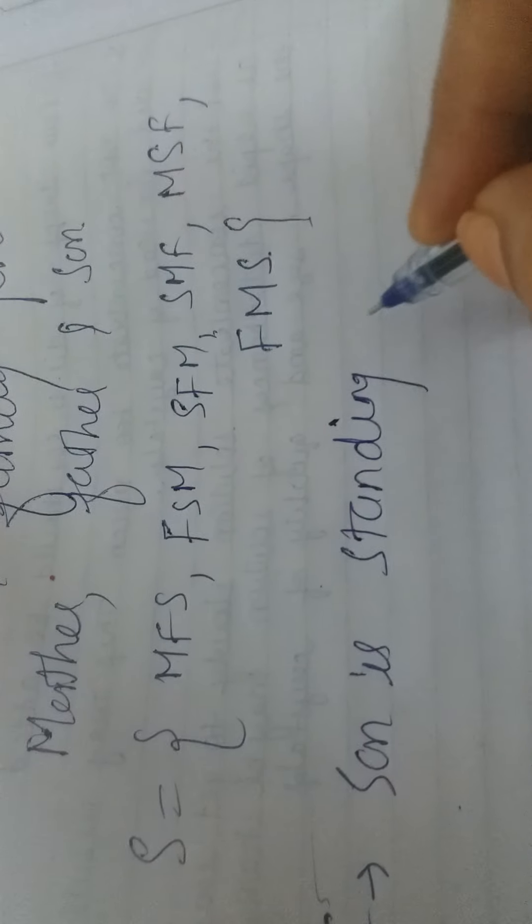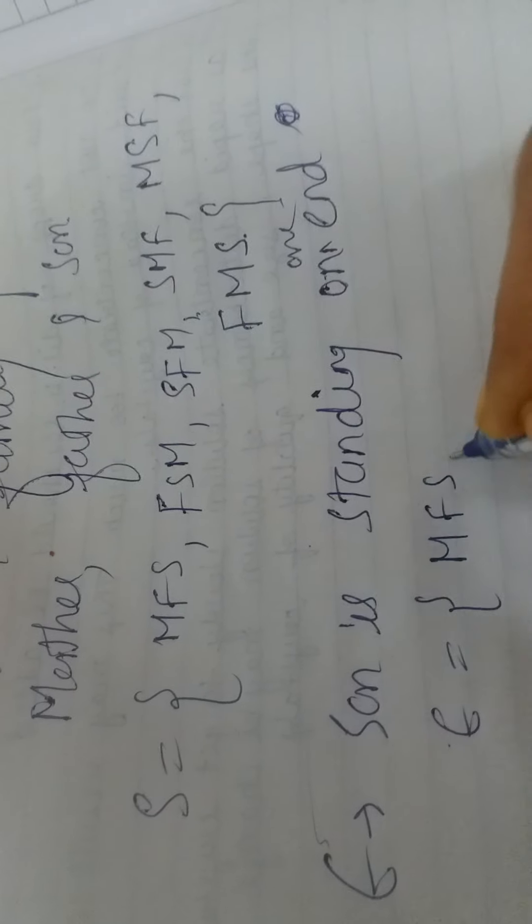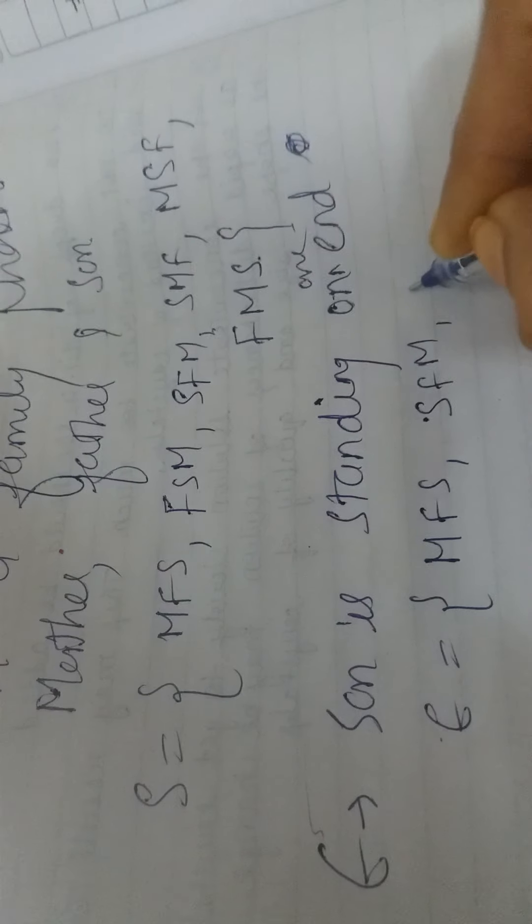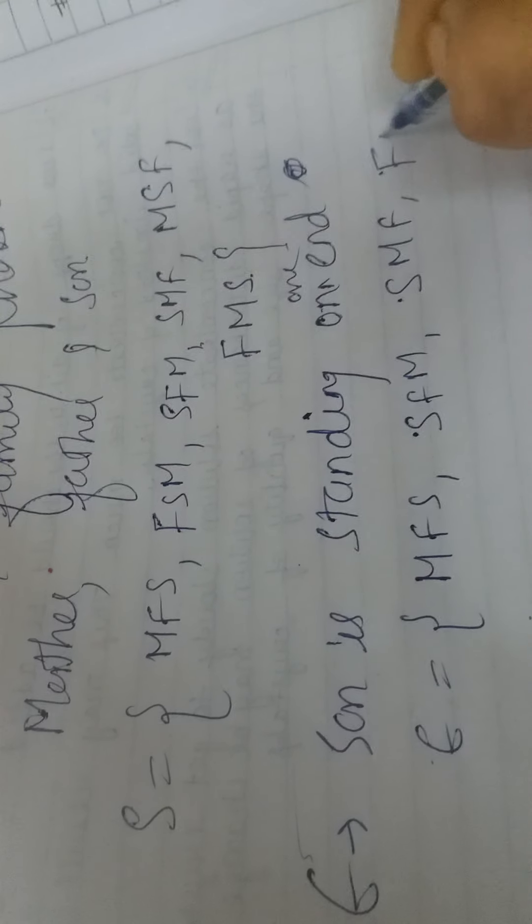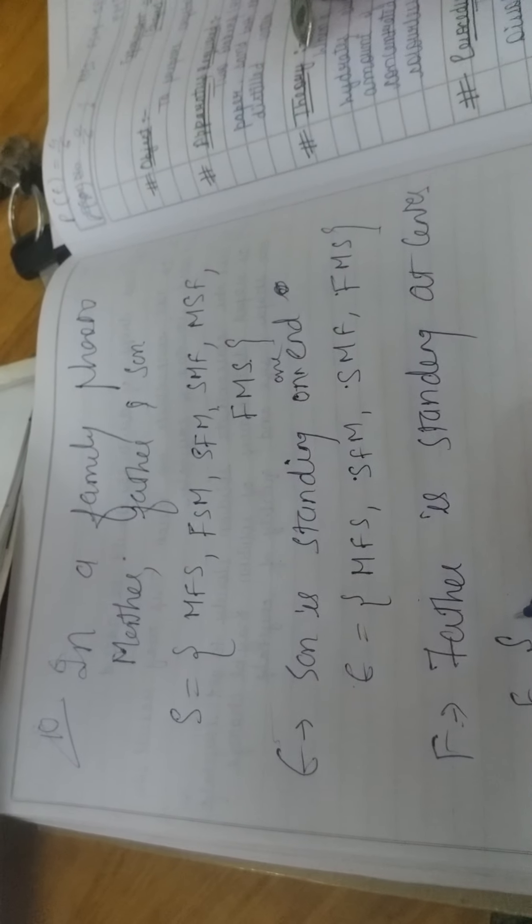Son is standing on one end. On any one end, son stands. So what do you have in the sample space? MFS, SFM, SMF, FMS. And what do you have in the F condition? Father is standing in center. Father is standing at center.